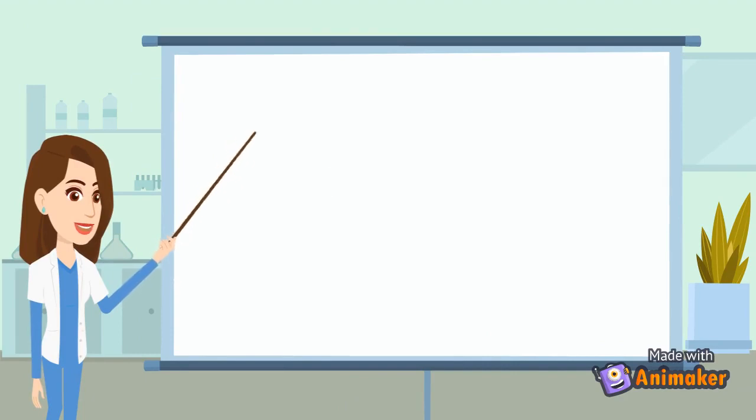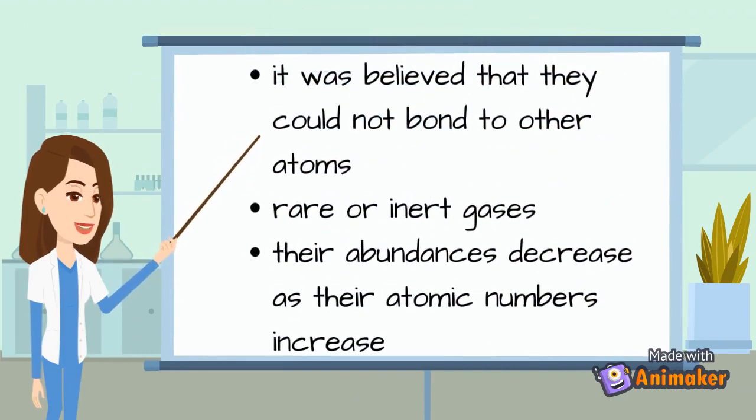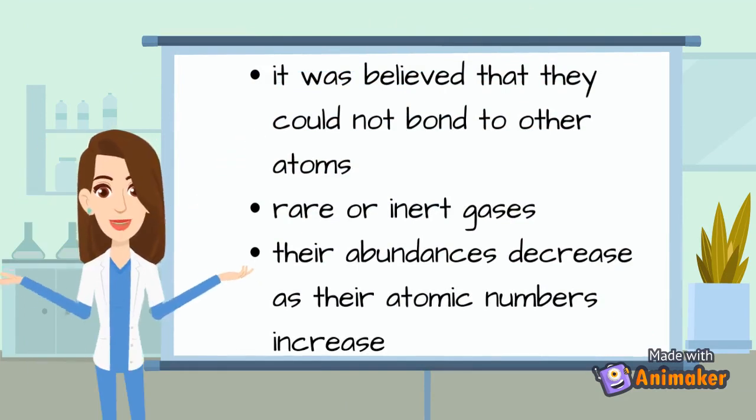It was believed that they could not bond to other atoms. That is, their atoms could not combine with those of other elements to form chemical compounds. Their electronic structures and the finding that some of them do indeed form compounds has led to a more appropriate designation, which is group 18.